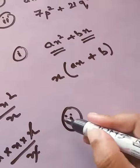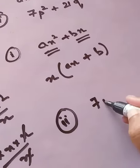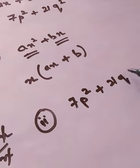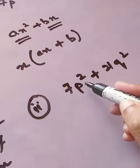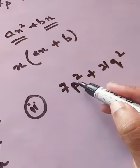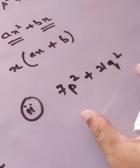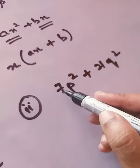Now let's try sum number 2. It is given 7p square plus 21q square. So look at the variables. In the first term the variable is p square, in the second term the variable is q square. So we cannot take variable as a common. But yes there is number is given.